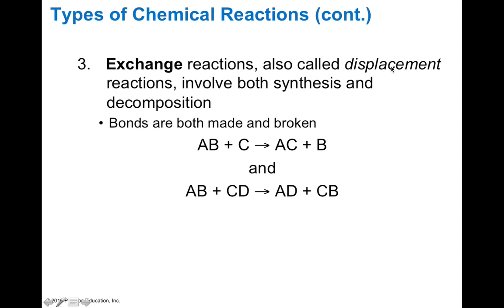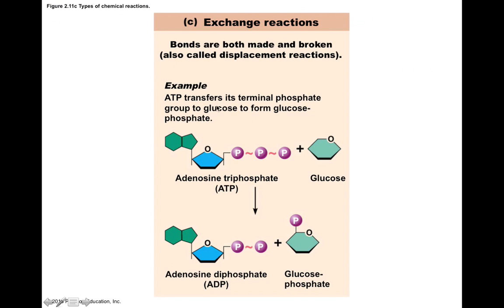An exchange reaction, also called a displacement reaction, involves both synthesis and decomposition. Bonds are both made and broken — think of it as a shuffling of atoms or molecules, where AB plus C could form AC plus B, or AB and CD can form AD and CB. It's a shuffling, rearrangement, or exchange of atoms or molecules. An example of this is ATP: adenosine triphosphate and glucose can be rearranged to form ADP and glucose-6-phosphate. This is an exchange reaction we'll revisit when we talk about metabolism.